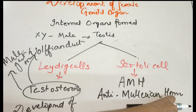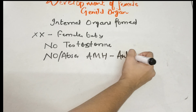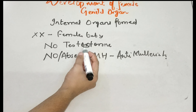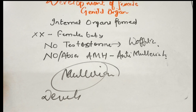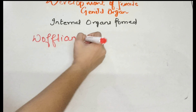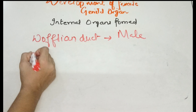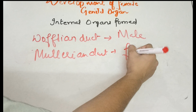Now let's see what happens in female babies. In female babies, there will be no testosterone and there is an absence of AMH — anti-Müllerian hormone. Because testosterone is absent, there is no development of the Wolffian duct. The conclusion is: the male baby structure is formed by the Wolffian duct, while the Müllerian duct forms the female internal organs.